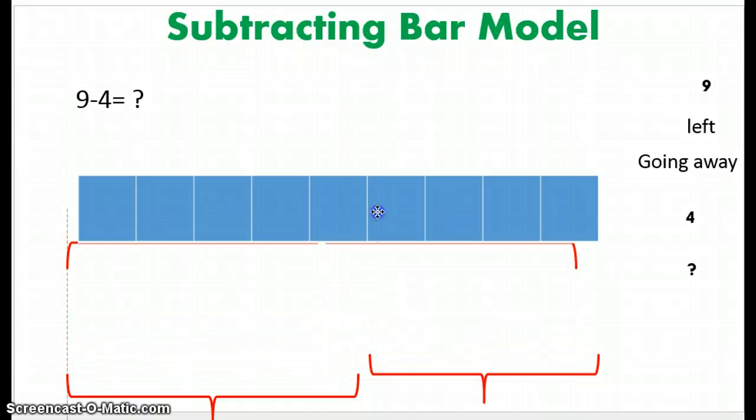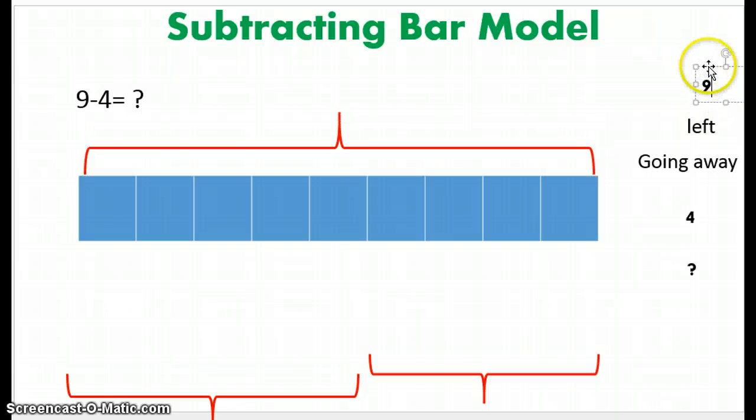So we have 9, 9 bars, so let's go ahead and label that with brackets and a number. Remember, we have 9 bars. So 4 of these bars are going to go away.